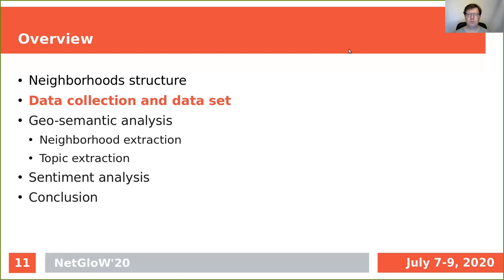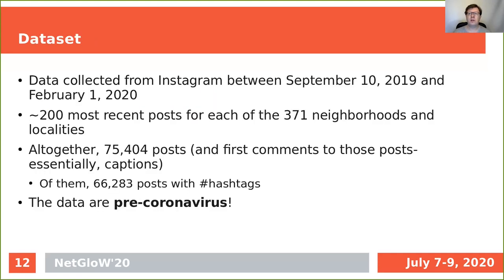Now that you are familiar with Boston — the city upon a hill, as it is often referred to — let's talk about the data we collected to digitally study Boston neighborhoods. The data came from Instagram, and it was collected between September 10, 2016 and February 1, 2020, over the course of about six months. Most of the data were collected in January and February, but we decided to keep the earlier posts as well, because getting data from Instagram is not necessarily the easiest exercise — it does not have a very friendly interface.